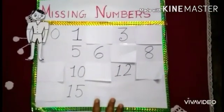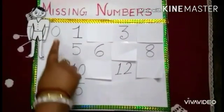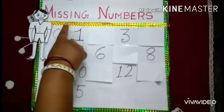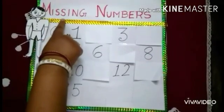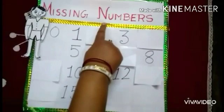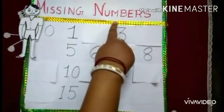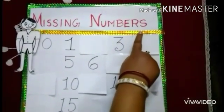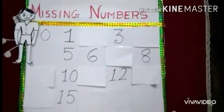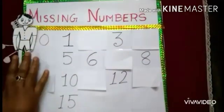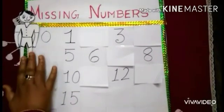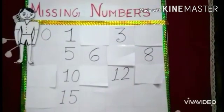See, children, this is the missing number. What is the spelling of 'missing'? M-I-S-S, miss. I-N-G, missing. N-U-M, num. B-E-R-S, numbers. Missing numbers. Here, one of your friends, Jack, is here. He is very much confused about the missing number. Can you help your friend?